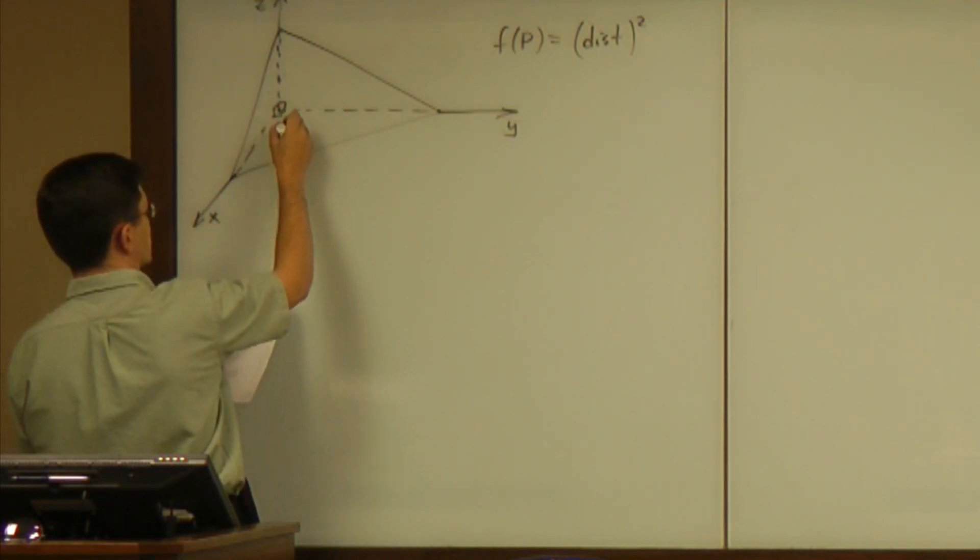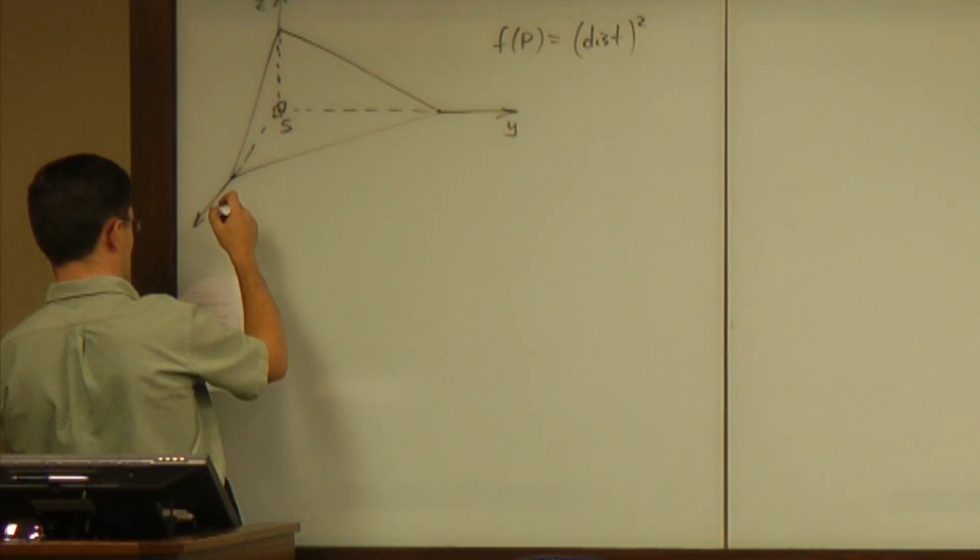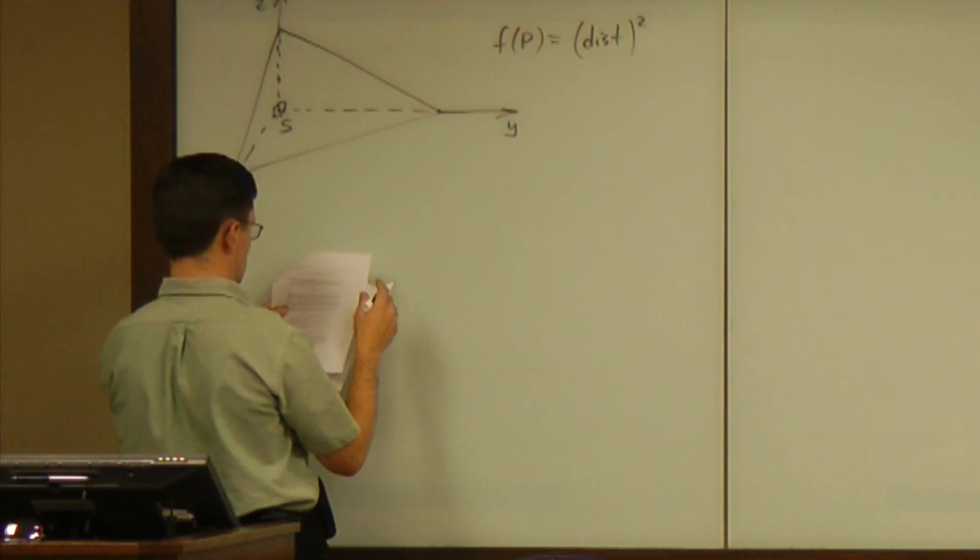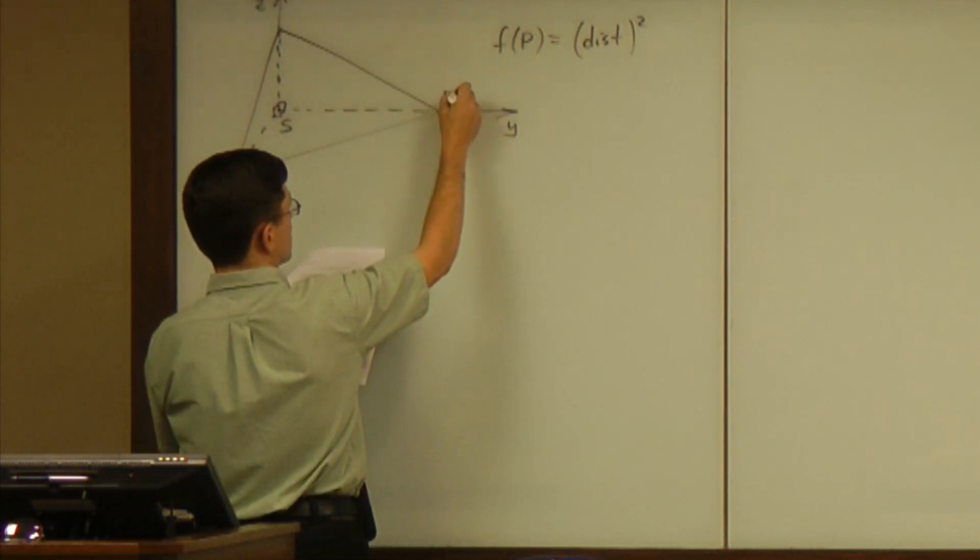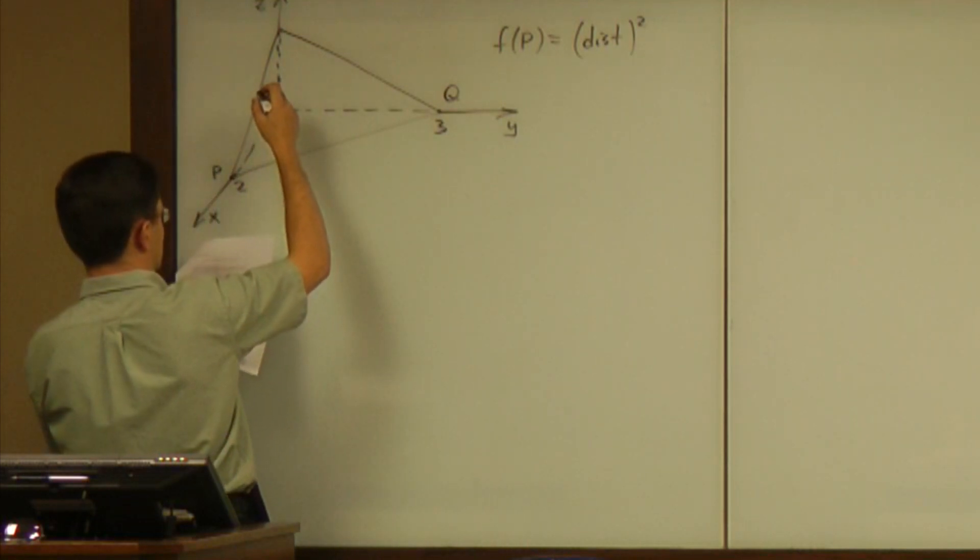That vertex is called S, SP has length 2, SQ has length 3, and SR has length 4.